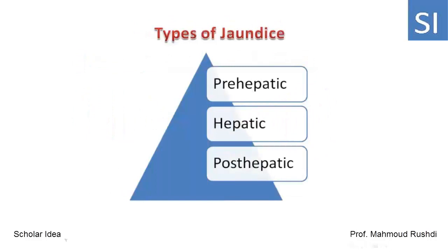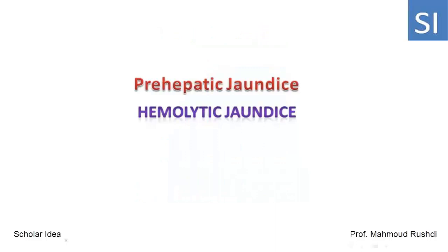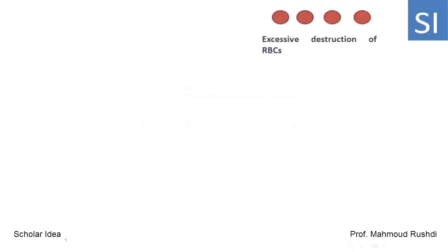Types of jaundice: Jaundice is classified into three types — pre-hepatic jaundice, hepatic jaundice, and post-hepatic jaundice. Pre-hepatic jaundice is also called hemolytic jaundice. This type of jaundice occurs due to excessive destruction of red blood cells.